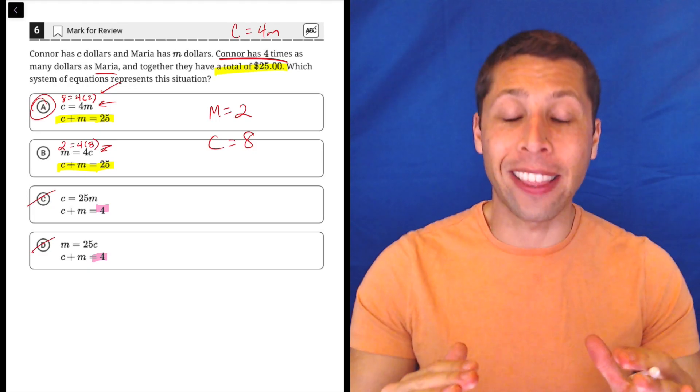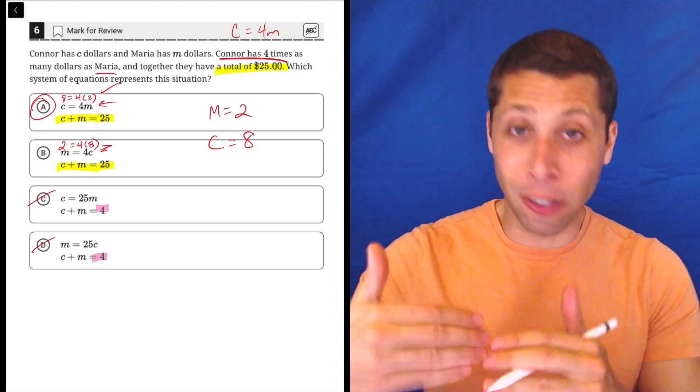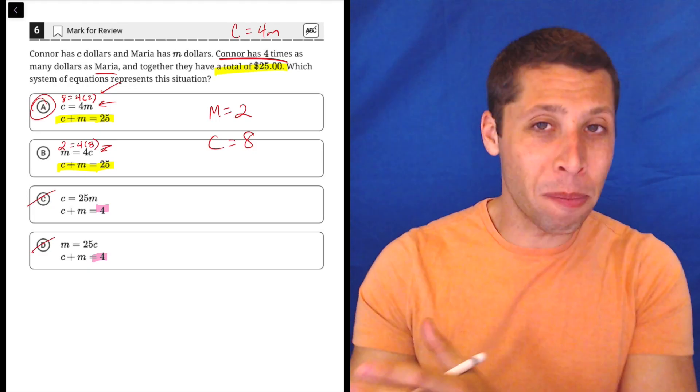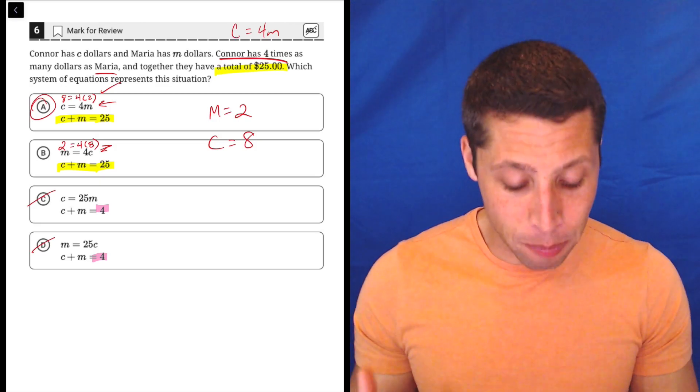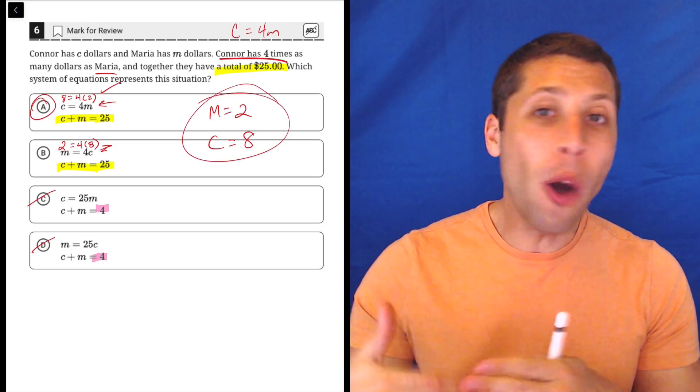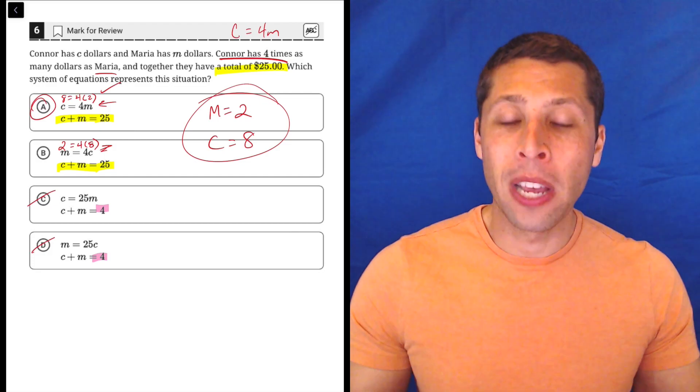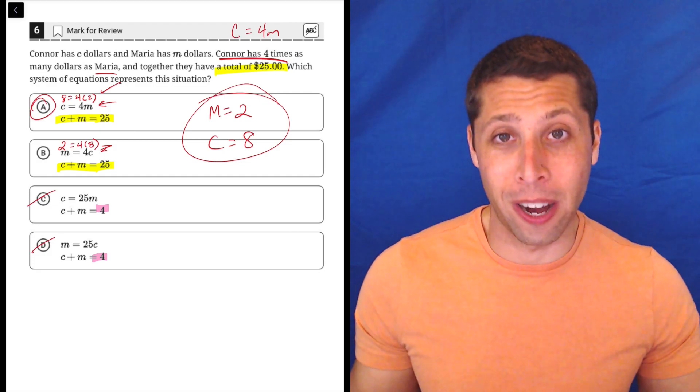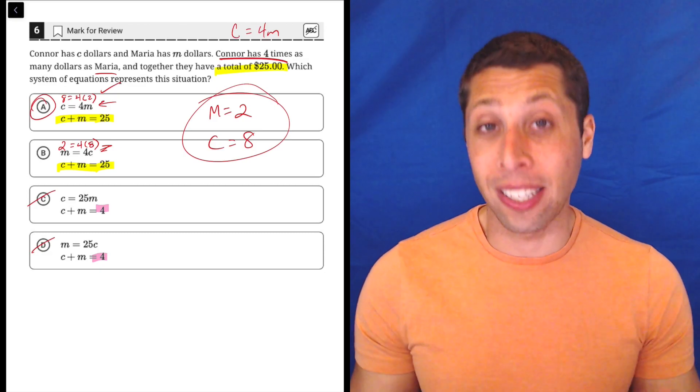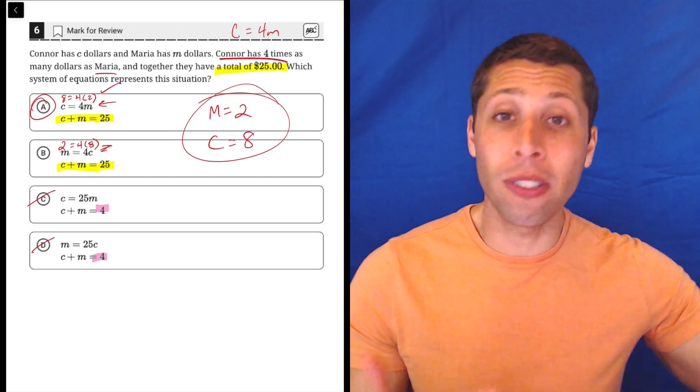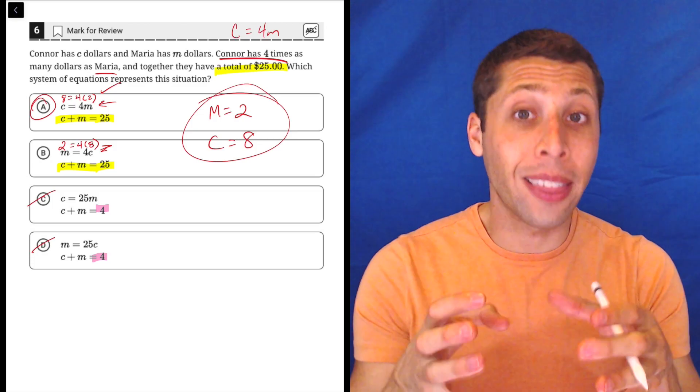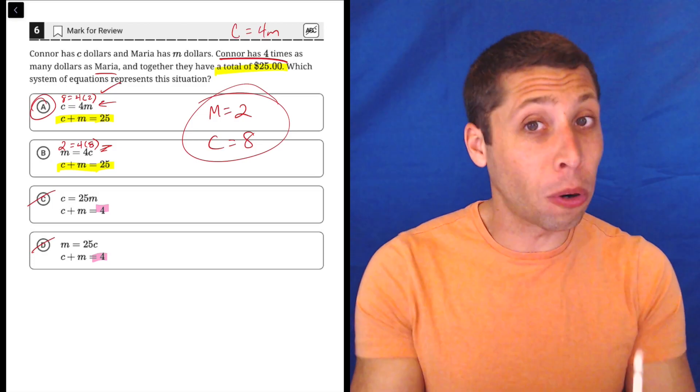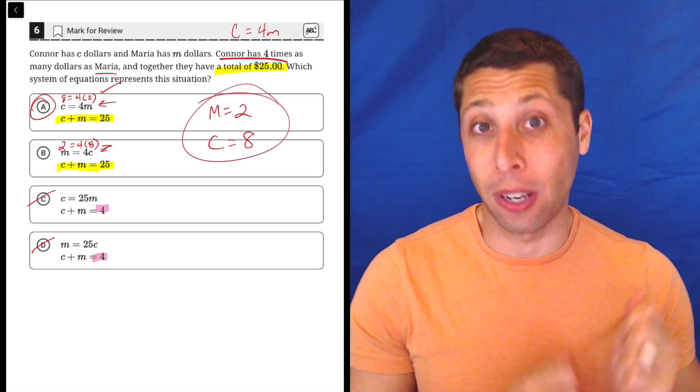So hopefully at some point you'll be able to just read this story and understand that C has four or Connor has four times as many dollars as Maria is literally just saying C equals 4M. You'll be able to read that and perfectly get that equation every time. But as training wheels use numbers to try to understand, and we can pick numbers temporarily, knowing that they don't need to be the perfect numbers, but they at least just temporarily let us see and understand better what's going on. So hopefully this gives you some new ideas to think about. Certainly as we get harder questions later in the section, we're going to want to think back to regular numbers more and more often because algebra gets more and more confusing.